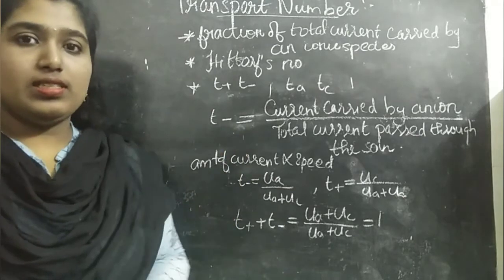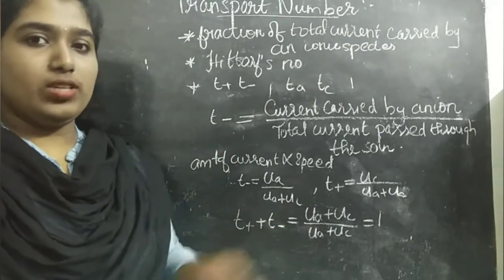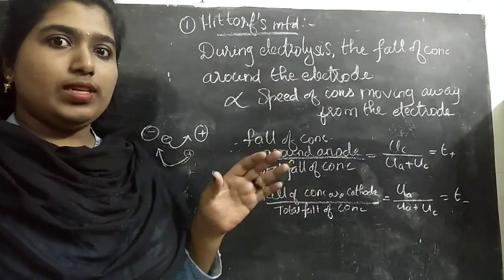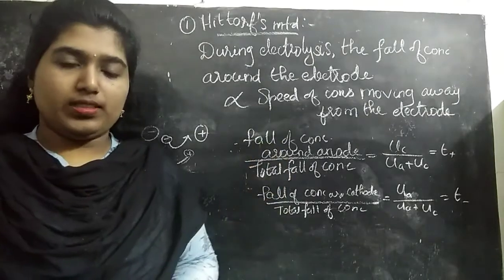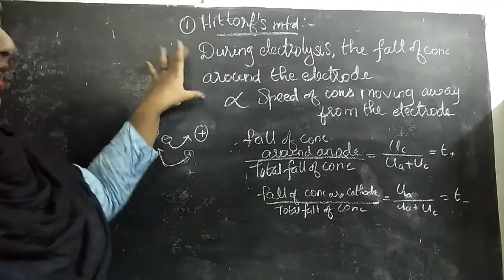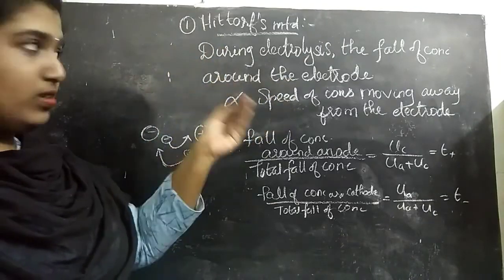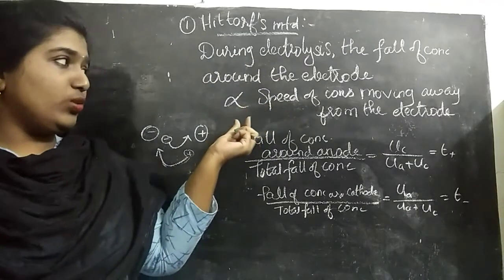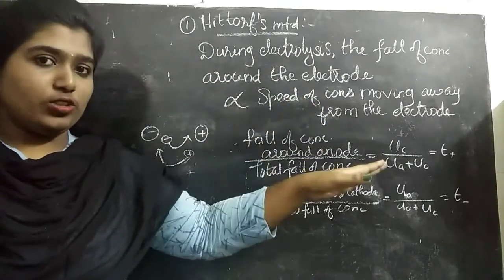Now we will discuss the methods for determining the transport number of a particular ion. The first method is Hittorf's method. The principle is: during electrolysis, the fall of concentration around a particular electrode will be proportional to the speed of the ions moving away from that electrode.